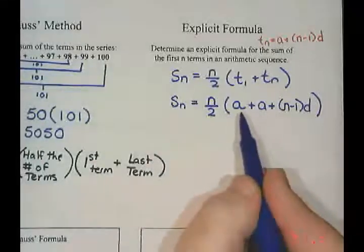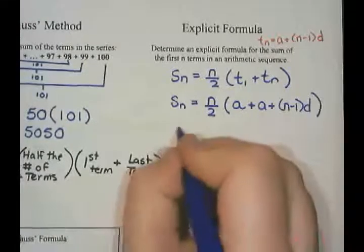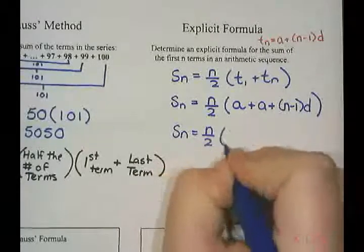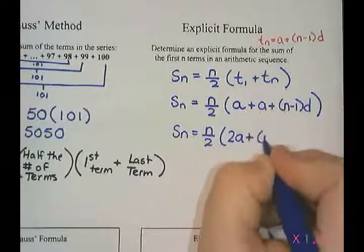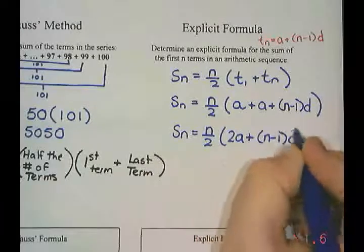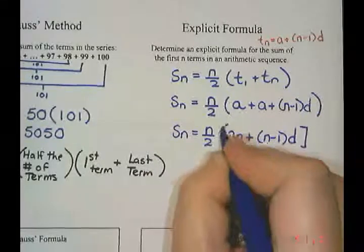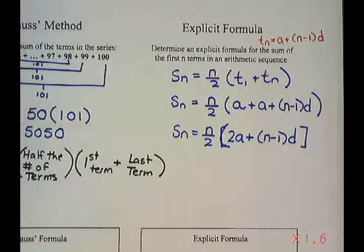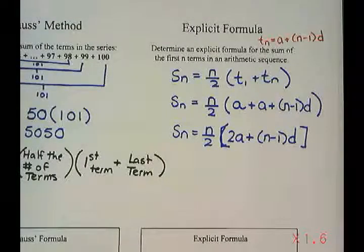And then I'm just going to collect the two a's together. And I get 2a plus n minus 1 times d. And this is just an alternate formula, another way of calculating the sum of the terms in an arithmetic series.